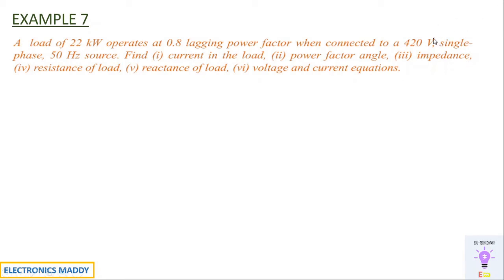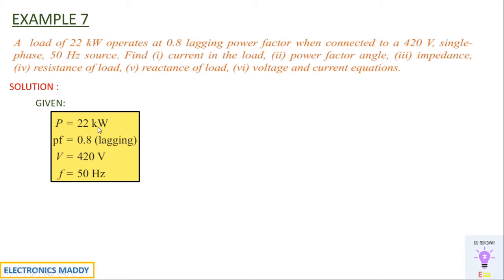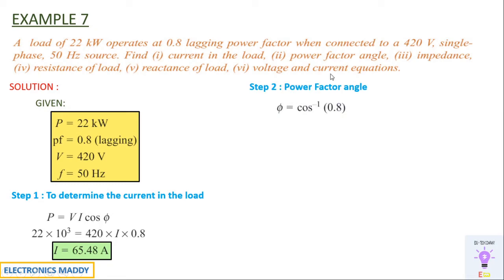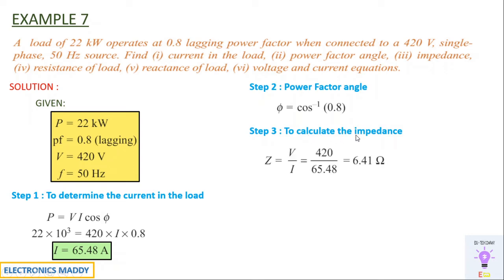Step one: find current. P = VI cos φ → I = P/(V × cos φ) = 22000/(420 × 0.8) = 65.48 A. Step two: power factor angle φ = cos⁻¹(0.8) = 36.87°. Step three: impedance Z = V/I = 420/65.48 = 6.41 ohms. These three steps are straightforward substitutions.